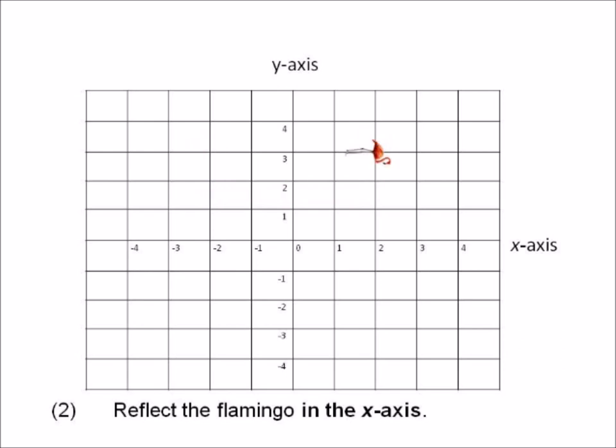Number two: reflect the flamingo in the x-axis. Now you have to identify the x-axis first and then flip the flamingo on the other side of the x-axis. 'In the x-axis' means on the other side of the x-axis. Here you have your answer — the red line shows how many spaces it was to the top, so you put it the same number of lines or spaces to the bottom when you flip it or give the reflection.